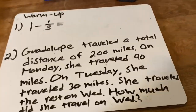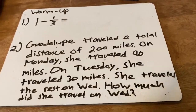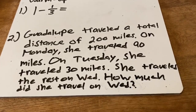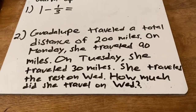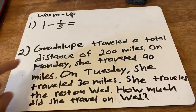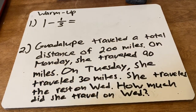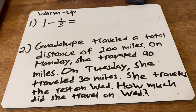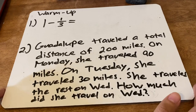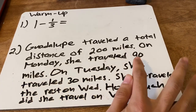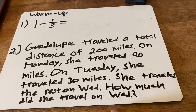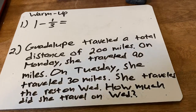All right, so now let's go ahead and get started with our warm-up. Go ahead and pause the video and answer it. For number two, I'll just read it because I know it's a little bit messy. It reads: Guadalupe traveled a total distance of 200 miles. On Monday she traveled 90 miles. On Tuesday she traveled 30 miles. She traveled the rest on Wednesday. How much did she travel on Wednesday? Go ahead and pause the video and answer it.